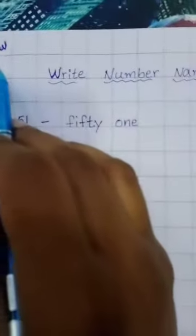In last class, we have learnt 1 to 50 number names. Now, we will be learning about 51 to 60 number names. We have to write CW and date here. Write number names for 51 to 60.